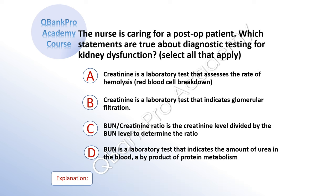The nurse is caring for a post-op patient. Which statements are true about diagnostic testing for kidney function? Select all that apply. A: creatinine is a laboratory test that assesses the rate of hemolysis, red blood cell breakdown. B: creatinine is a laboratory test that indicates glomerular filtration. C: BUN-creatinine ratio is the creatinine level divided by the BUN level to determine the ratio. D: BUN is a laboratory test that indicates the amount of urea in the blood, a byproduct of protein metabolism.